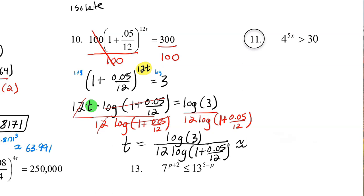Now the challenging part is typing that correctly in your calculator. I would recommend: type the numerator, hit enter, and then use a parenthesis. You should be able to type everything else as is. So log 3 — I got 0.477. Then divide by parenthesis 12 times log(1 + 0.05/12), and I get the answer. The units here would be years. It would take 22 years for your money to go from $100 to $300 at a 5% interest rate.